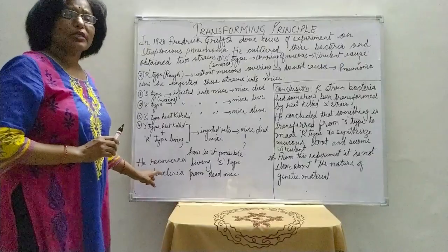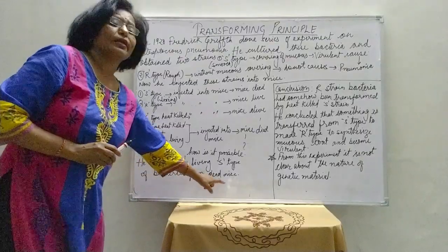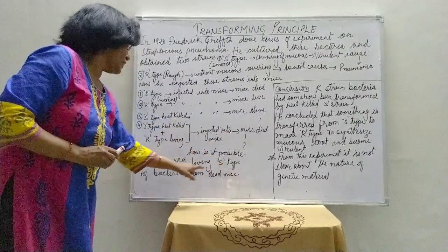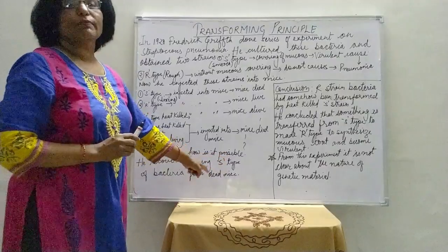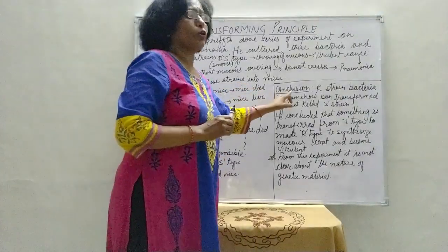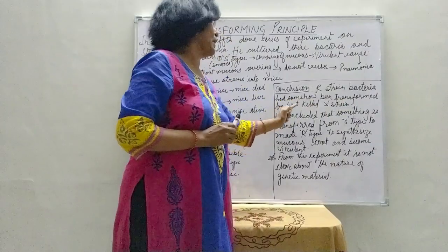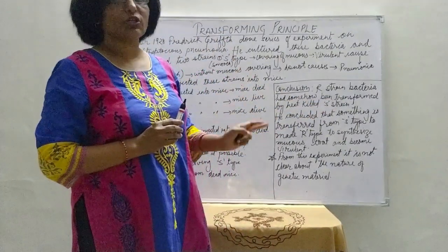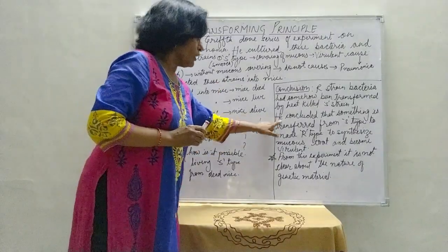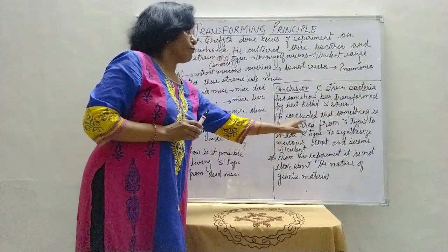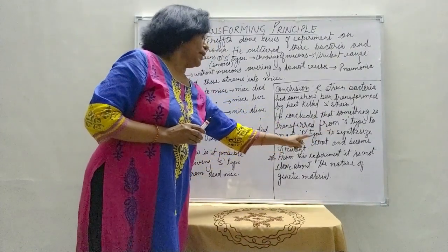The miraculous result was that when he recovered bacteria from the dead mice, he found living S type bacteria. If neither the heat-killed S type nor the R type alone was capable, how did living S type appear? He concluded that the R strain bacteria had somehow been transformed by the heat-killed S strain. Something had given the instruction to form the mucus membrane — the polysaccharide covering — making the R type synthesize a mucus coat and become virulent.